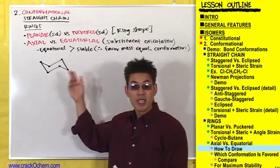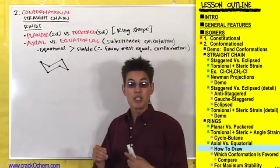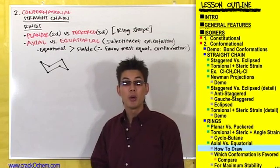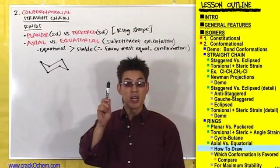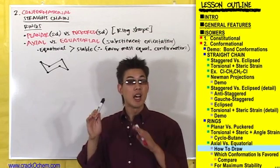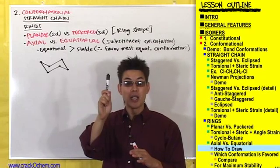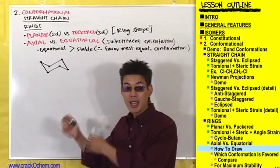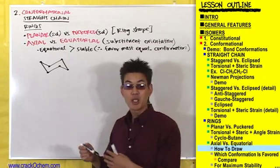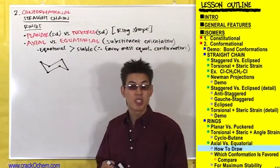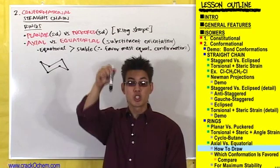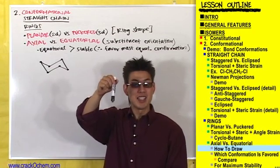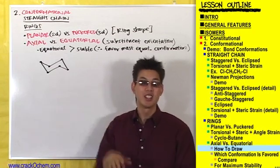If the chair is pointing up, then I'm going to draw an axial substituent pointing straight up — not diagonally up, but straight up. And if the chair is pointing down, then I'm going to draw the axial substituent pointing straight down — not diagonally down, but straight down.